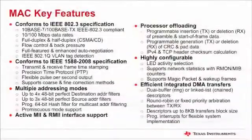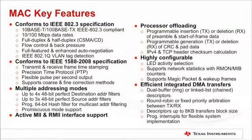Now let's take a quick look at some features specifically associated with the MAC. The MAC conforms to IEEE 802.3 standard. In computer networking, the 802.3 spec is also called fast Ethernet. It is a collective term for a number of Ethernet standards that carry traffic at a nominal rate of 100 Mbps, against the original Ethernet speed of 10 Mbps. Of the fast Ethernet standards, 100BASE-TX is by far the most common and is supported by a vast majority of Ethernet hardware currently produced.